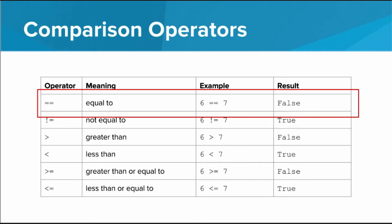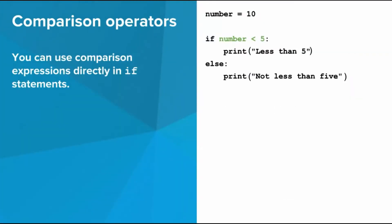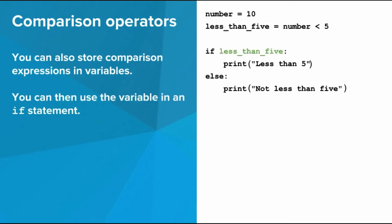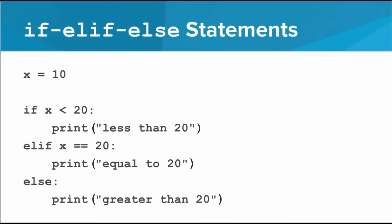You're probably going to mix these two up at some point — and don't worry, I've done it too. As we saw with Yelena's high jump attempt, you can use comparison expressions directly in an if statement. In this case, the comparison evaluates to false, since 10 is not less than 5, so the else part of the statement is what runs. You can also store comparison expressions in variables, and then use the variable in an if statement.